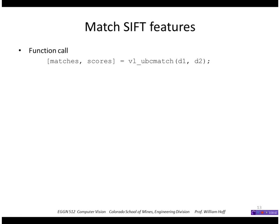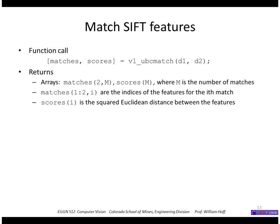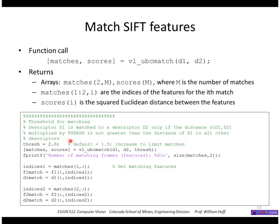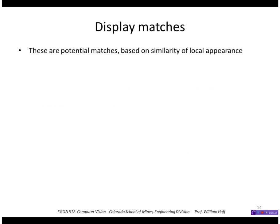In the matching phase, we call VLUBCMatch to match those two sets of descriptors. This returns the indices of the matching features in a variable called matches. Matches row one is the index of the feature in the first image, and matches row two is the index in the second image. This also has a parameter you can adjust to get more or fewer matches. The matching uses the Euclidean distance between the two sets of features — it wants a small distance compared to the matching distances to all the other features. What we get is a set of potential matches based on local appearance similarity, so many may be incorrect with no notion yet of mutual consistency.